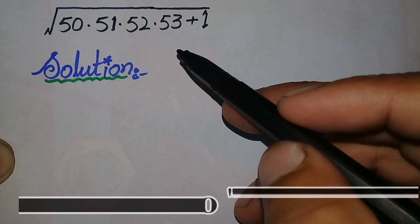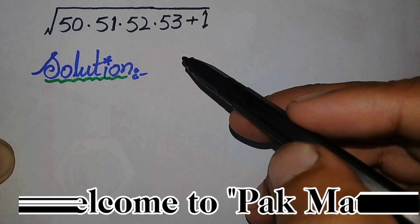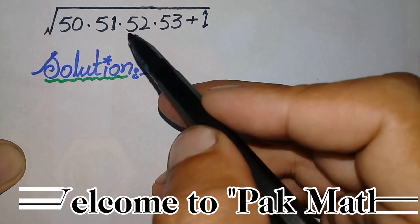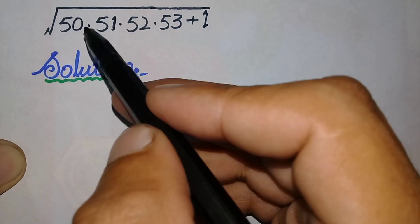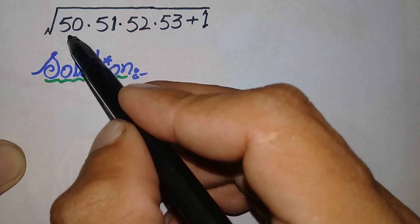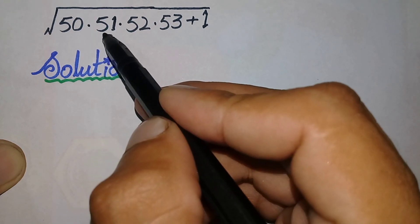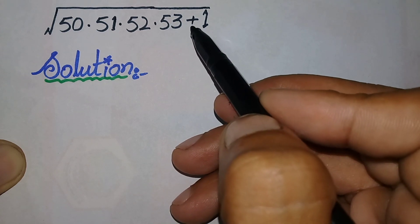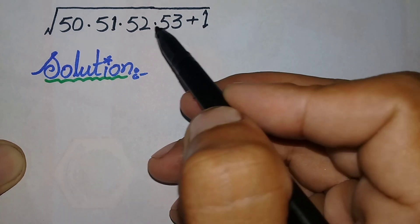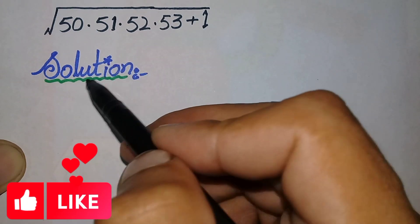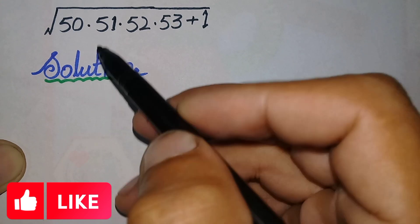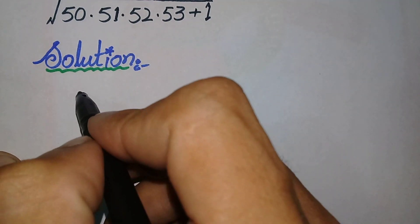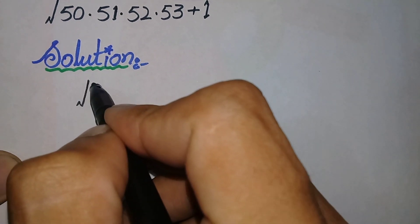Hello everyone, welcome to Parkmas. In this video I'm going to solve this interesting square root math problem: the square root of 50 times 51 times 52 times 53 plus 1. To solve this question properly, first we will write the solution and restate the question.